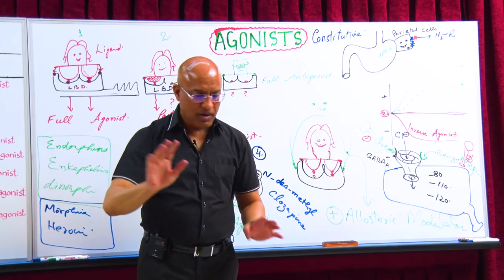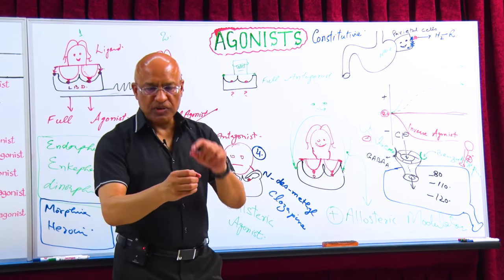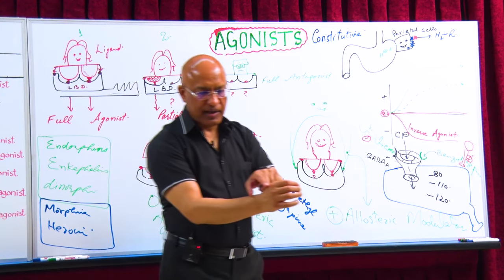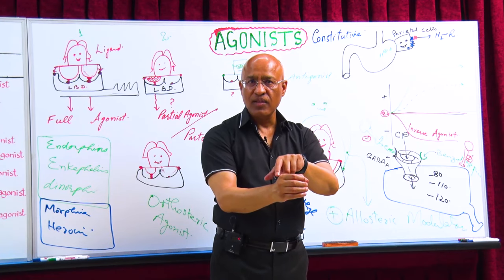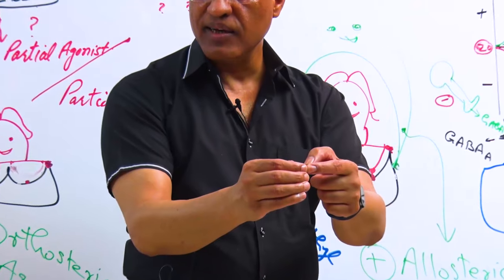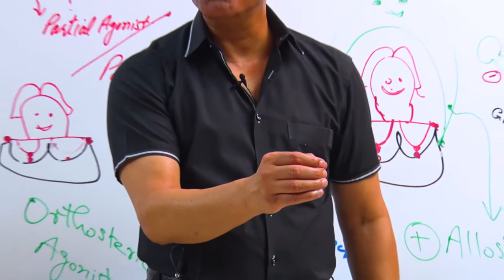Is it clear? Now, benzodiazepines bind here, GABA binds here. Please focus. GABA is binding here, benzodiazepine is binding here, but both of them are doing similar functions. They enhance the frequency of opening and closing.